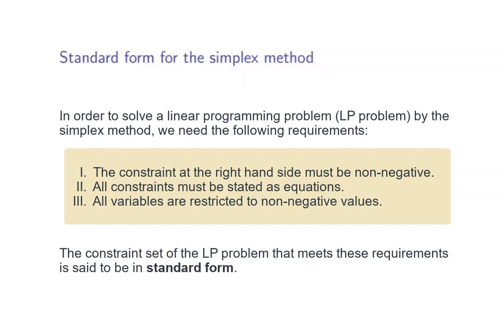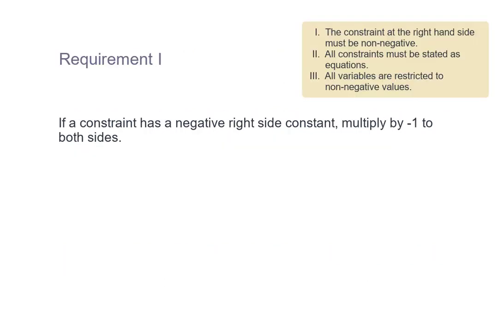In the following, we will mention how we should change our constraints so that they meet each of these requirements. First, we can deal with requirement 1, which states that the right-hand side of any constraint equation must be non-negative. In case we come across a constraint which has a negative right-hand side coefficient, we can simply multiply the whole constraint by negative 1 on both sides so that the right-hand side coefficient becomes positive again.